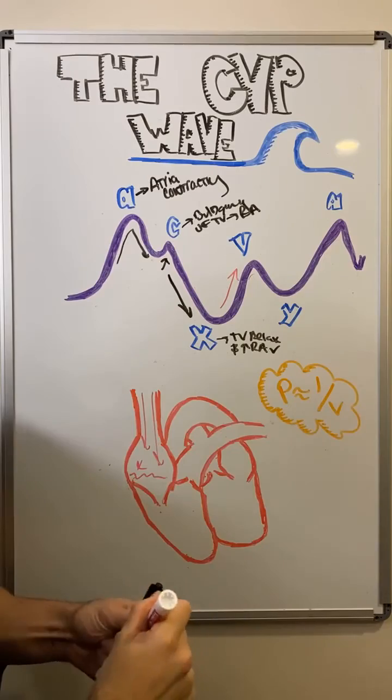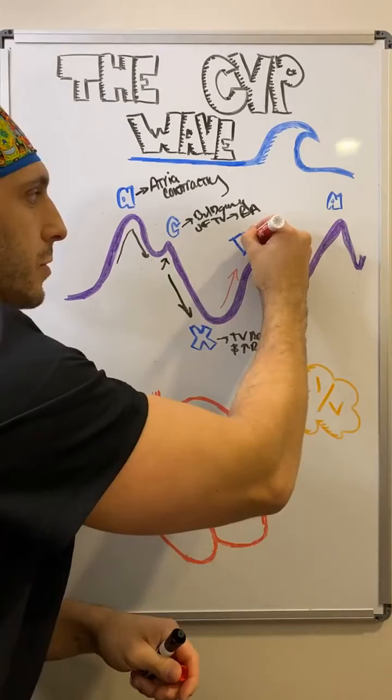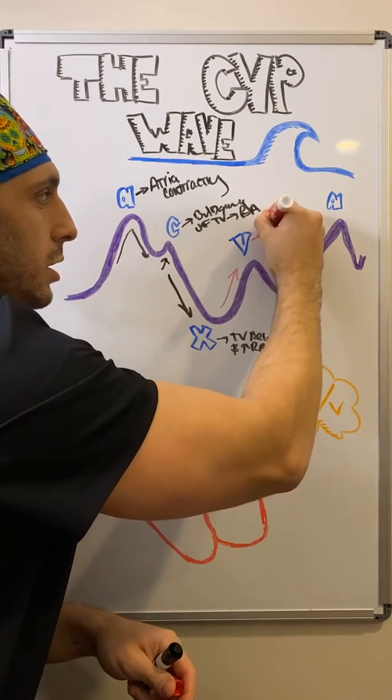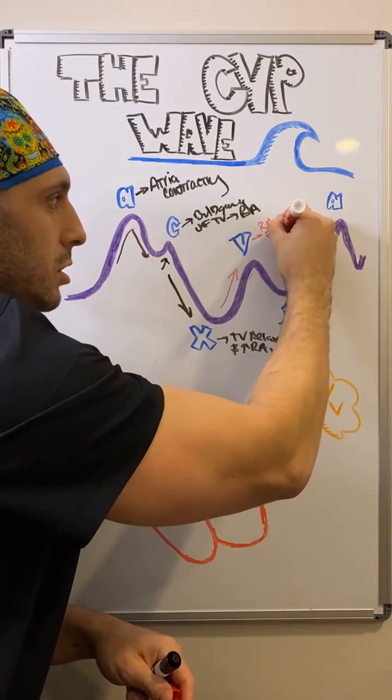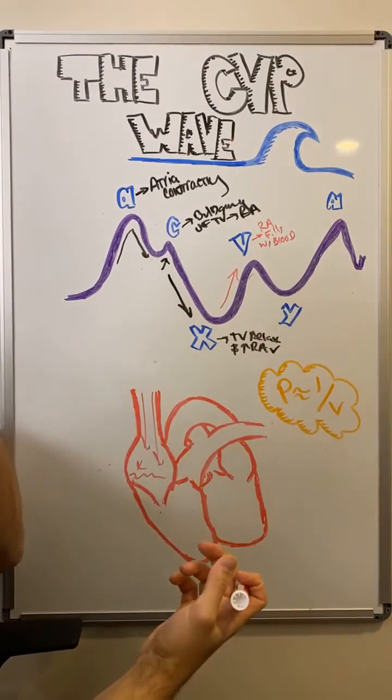And then the very last part of this is the Y descent. We'll say right atria fills with blood. So the pressure goes up because you're filling that area with something.